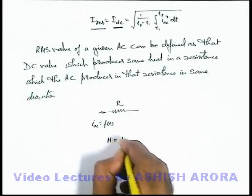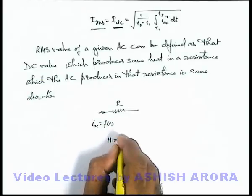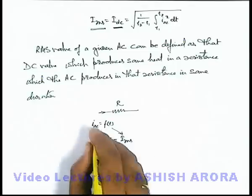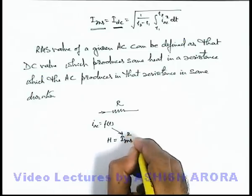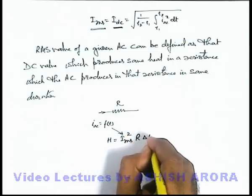the heat produced will be equal to i RMS, which is the RMS value of this AC current, square R delta t, directly.